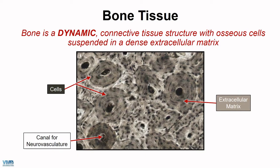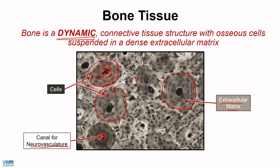Bone is the most dense of the connective tissues, and it's important to remember that it is dynamic — meaning it's not a stagnant framework structure that doesn't change with time; it's constantly changing. We'll focus more on its growth and remodeling in future videos. From this image we see cross sections of what are called osteons — these look like a tree ring structure, with circles leading toward the innermost part that contains the neurovasculature. We also see darker structures here, which are the cells embedded in the tissue, suspended in extracellular matrix.